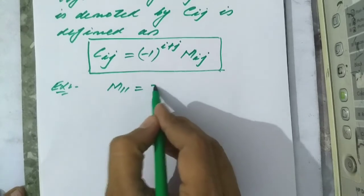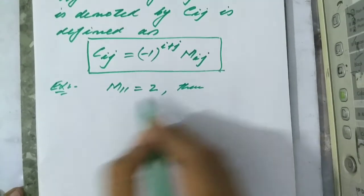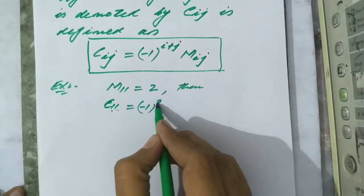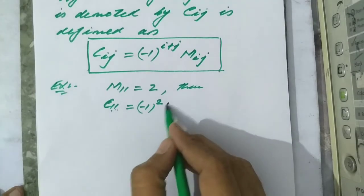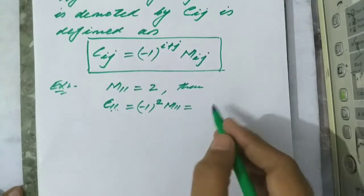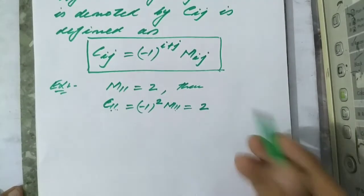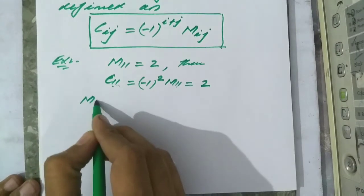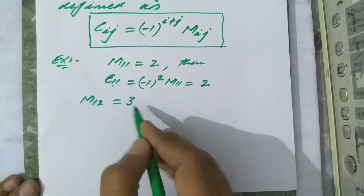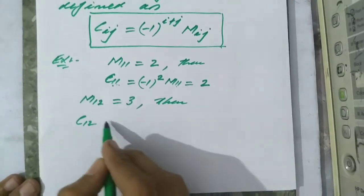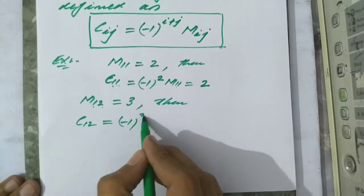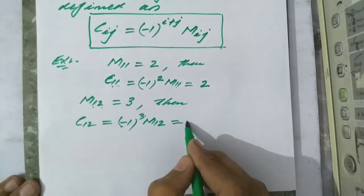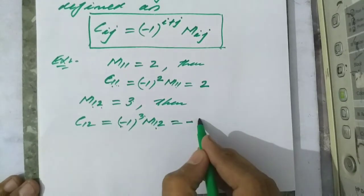For example, if m11 = 2, then c11 = (−1)^(1+1) · m11 = (−1)² · 2 = 1 × 2 = 2. So if m11 = 2 then c11 = 2. But if m12 = 3, then c12 = (−1)^(1+2) · m12 = (−1)³ · 3 = −1 × 3 = −3.